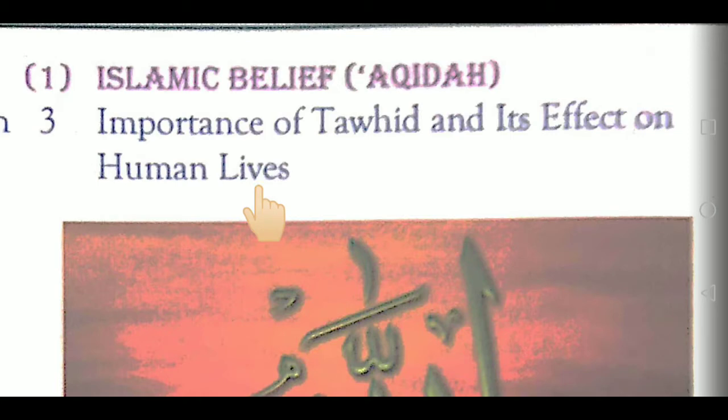If you remember, in our first two lessons we learned about the meaning of Tawheed and its aspects. We came to know that there are 3 aspects of Tawheed and 7 conditions of Tawheed. When we have a clear concept and deep faith in Tawheed in our heart, there are different effects on our life. So what are the effects of believing in Tawheed? We will see in this lesson.